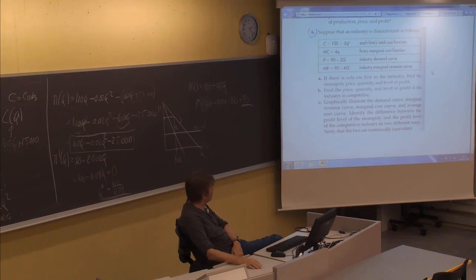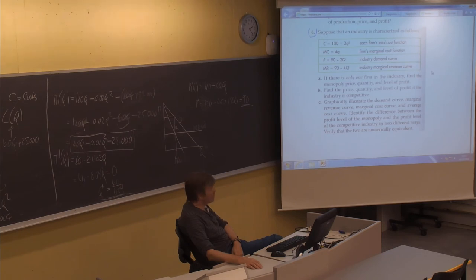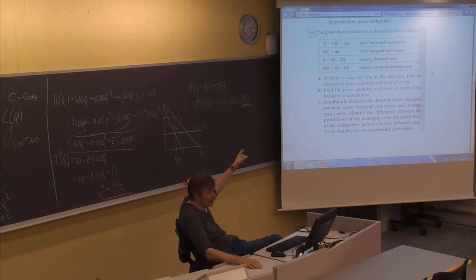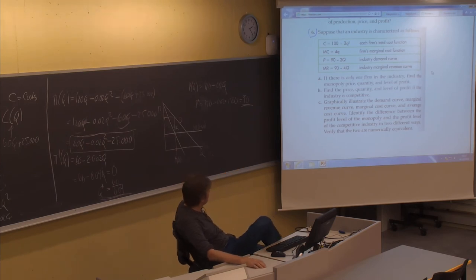Here we have given some information about an industry. First, there is a total cost function which each firm has: 100 plus 2q squared. Each firm's marginal cost function is also given, but we don't need it separately because if we take the derivative of the total cost function we get 4q. Then there is a demand curve for the industry.